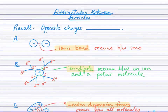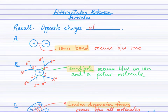This lesson is largely review from grade 11 chem unit 1. We're looking at attractions between particles. If you think back to grade 9 electricity, opposite charges attract, and it's these positively and negatively charged particles or regions of particles that we're going to be looking for in the different attractions between particles.